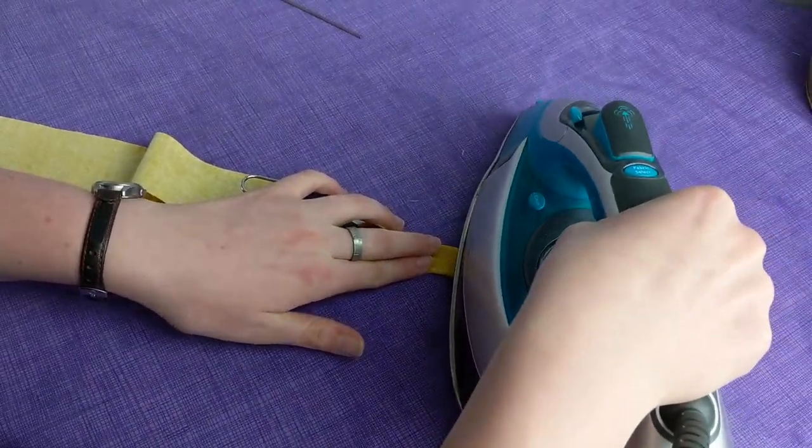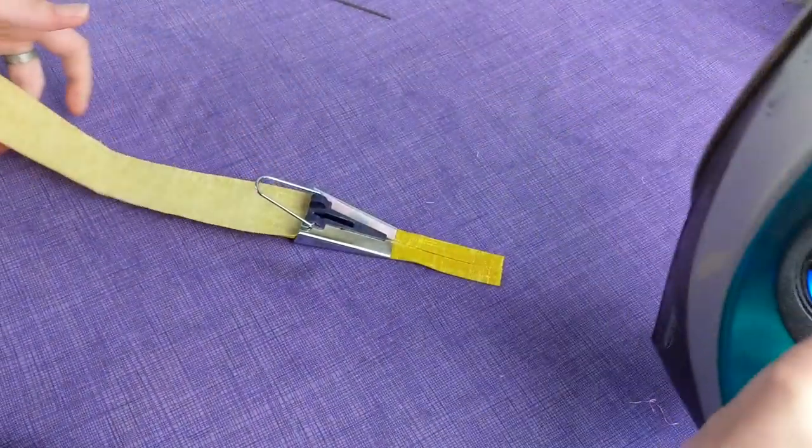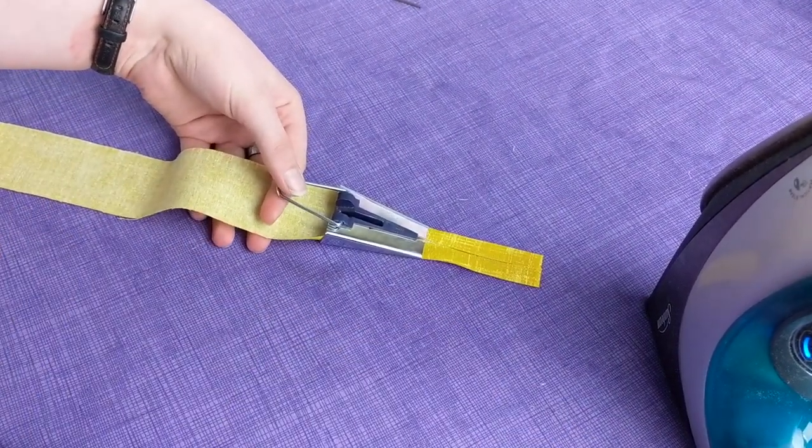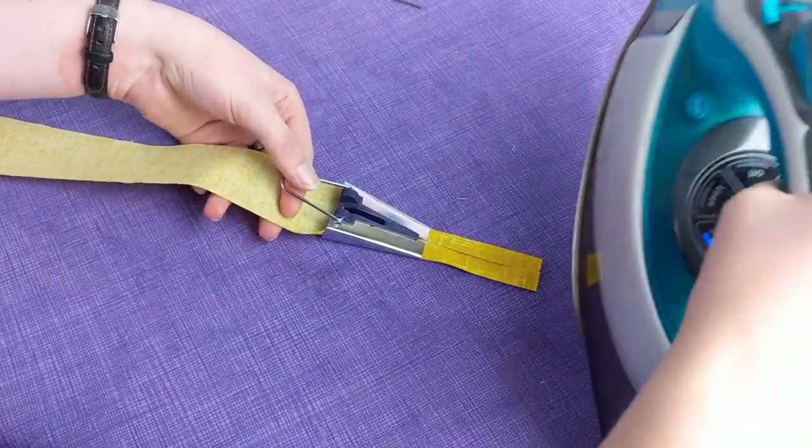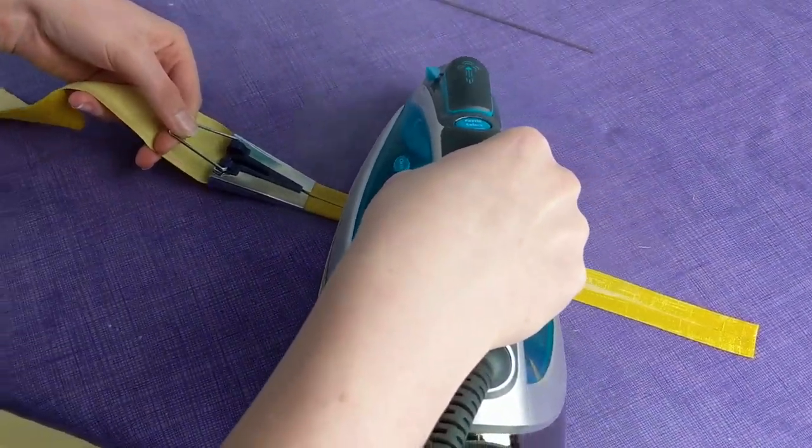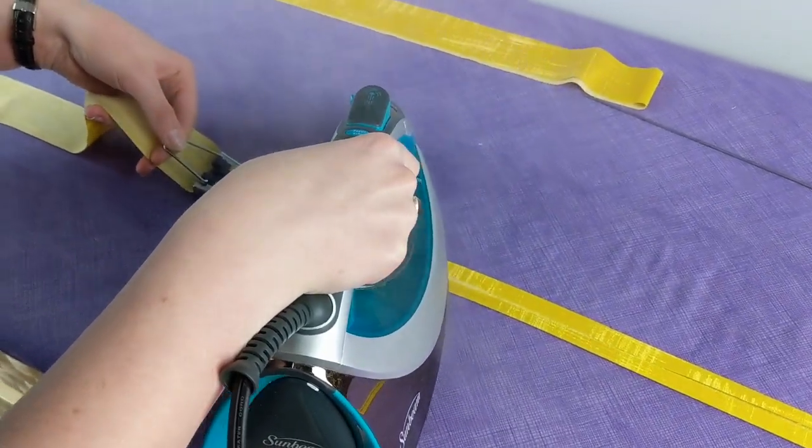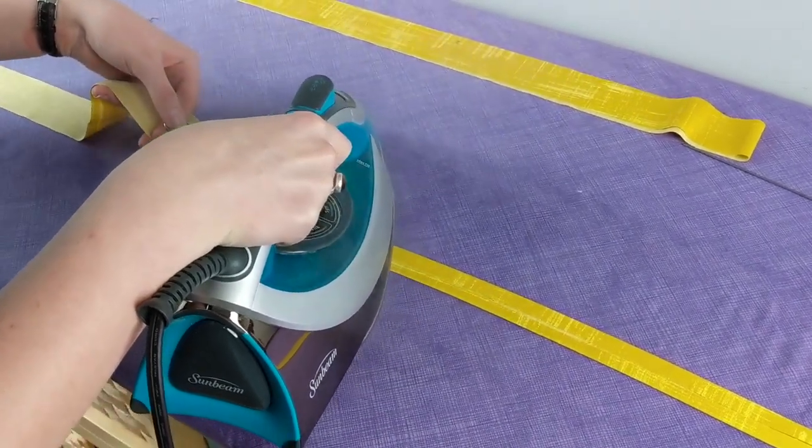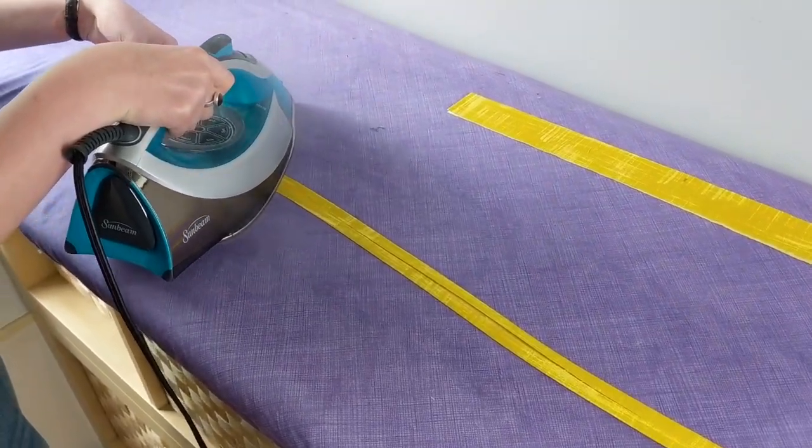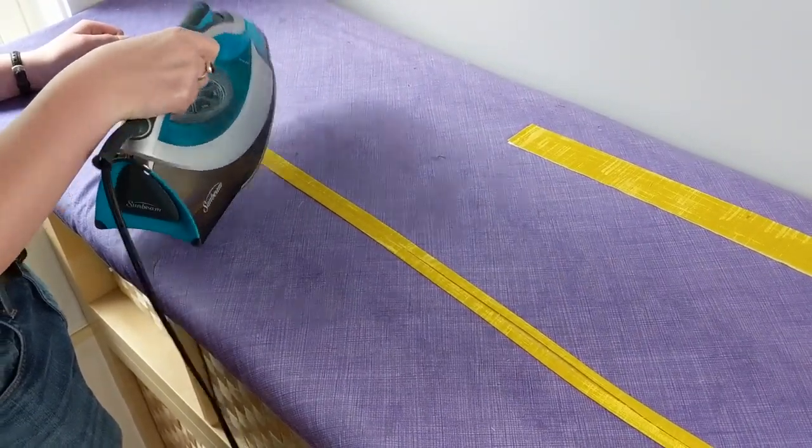I start horizontally with my iron. Then I hold the bias tape maker with my thumb here and my hand underneath the fabric to help prevent any wrinkles. I hold the bias tape maker about one inch away from my iron, using just the back right side of my iron. This will prevent wrinkles and give you a much smoother product.